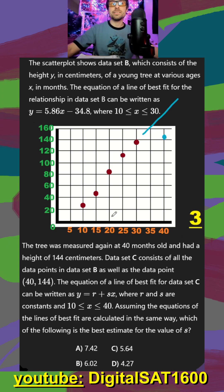So data set C consists of all the points that we had, as well as this new data point. The equation of the line of best fit for our new data set C can be written as this, where our X values are now going to go all the way up to 40. Assuming the equations of the lines for best fit are calculated in the same way, which of the following is the best estimate for the value of S?